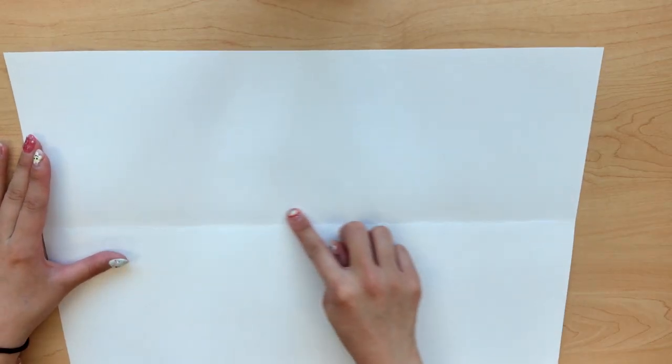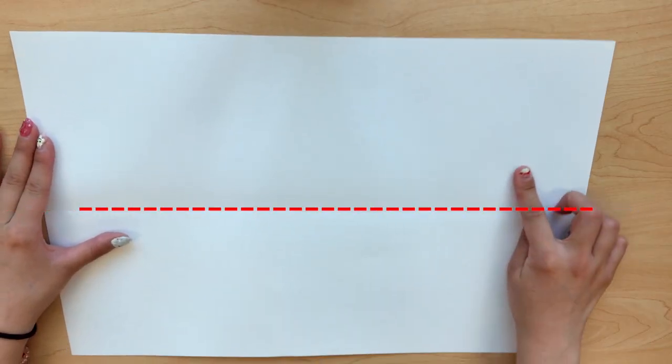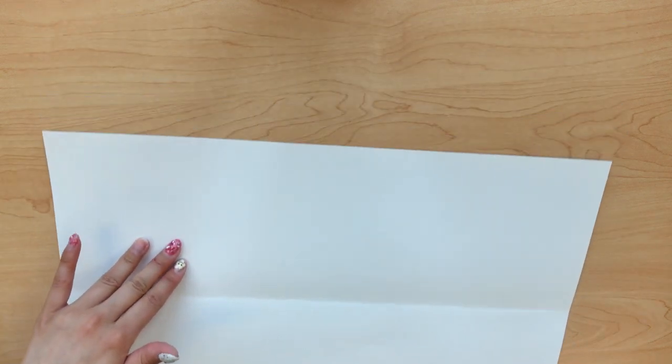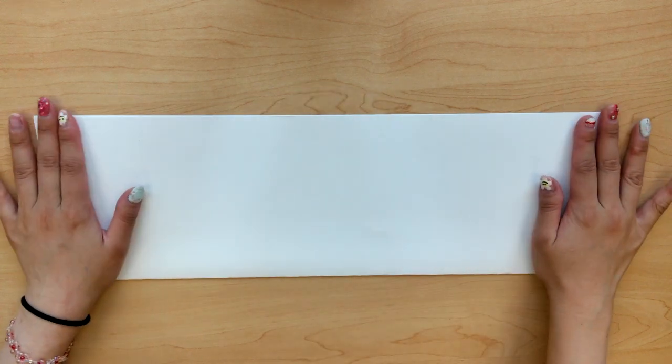The very first thing you want to do is make a fold on your paper. This is going to be a hot dog fold and you're going to fold it directly in the center. Make a nice sharp crease.